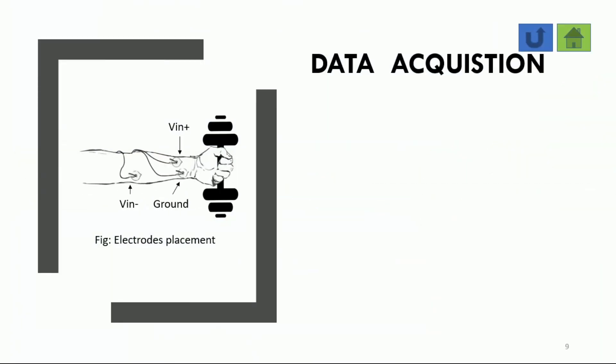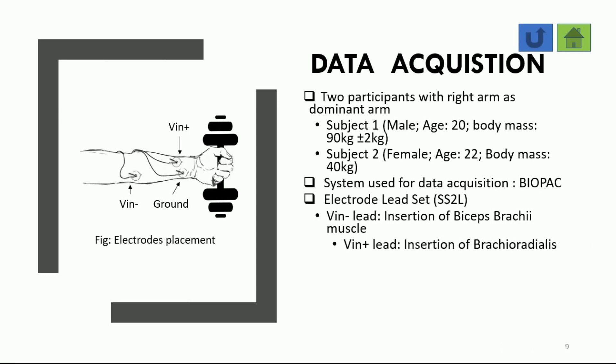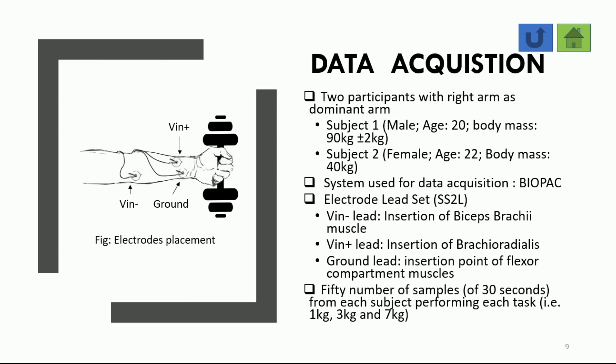The data was acquired by Biopax system for EMG data collection. Two subjects, one male and one female with right arm as dominant arm, were given lifting tasks of weight lifting including weights of 1 kg, 3 kg, and 7 kg. Negative lead with electrode was placed at insertion of the biceps brachii, positive on the insertion point of brachioradialis, ground on the insertion point of flexor compartment muscles. Total 50 number of samples were taken, each of 30 seconds from each subject with each task.